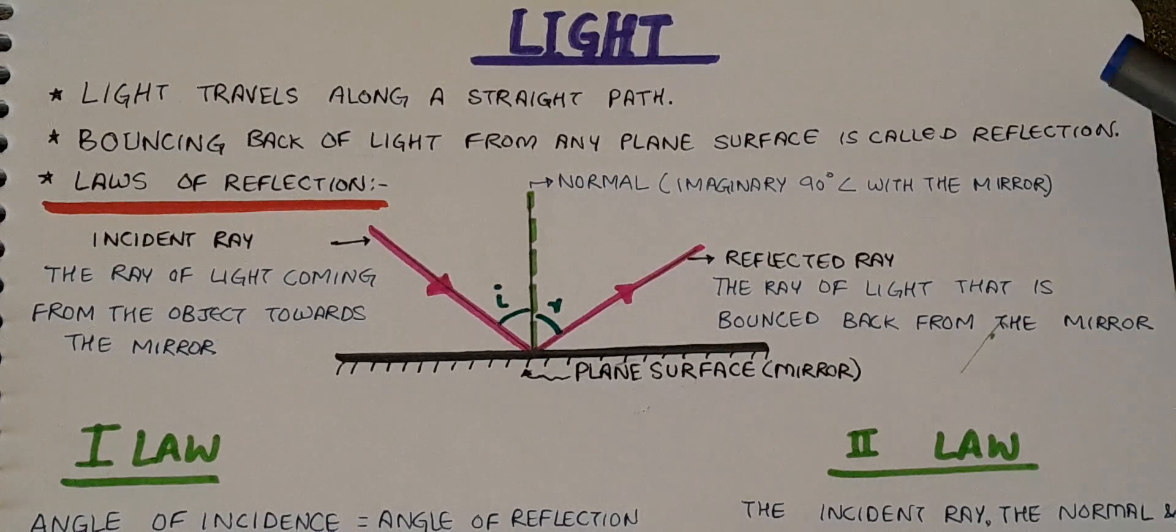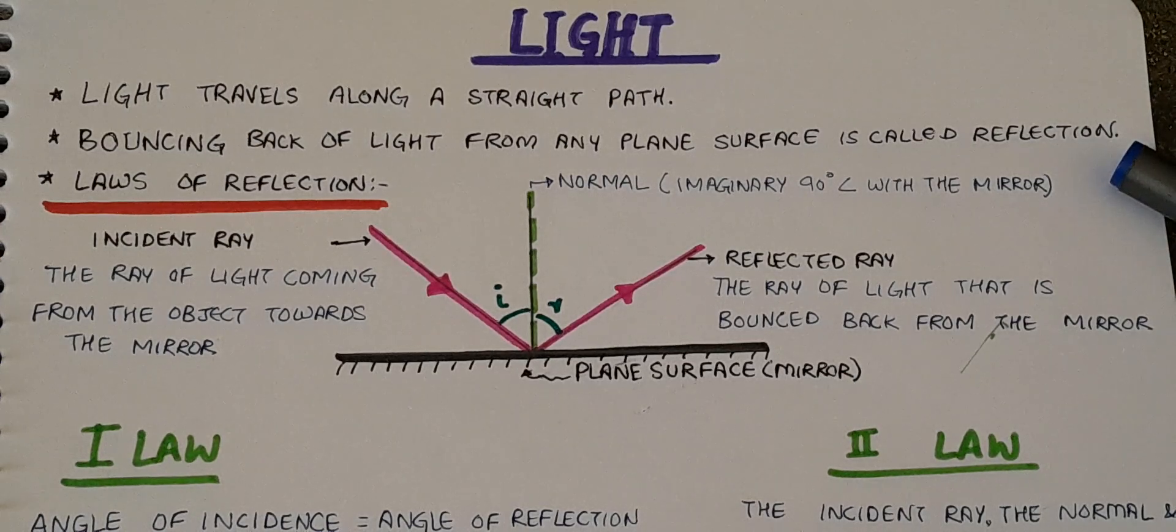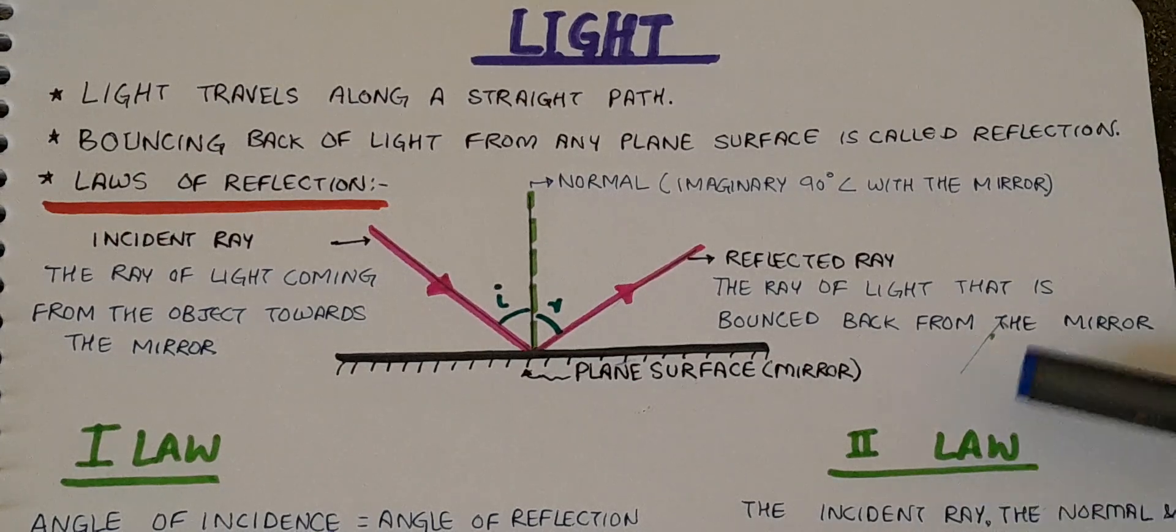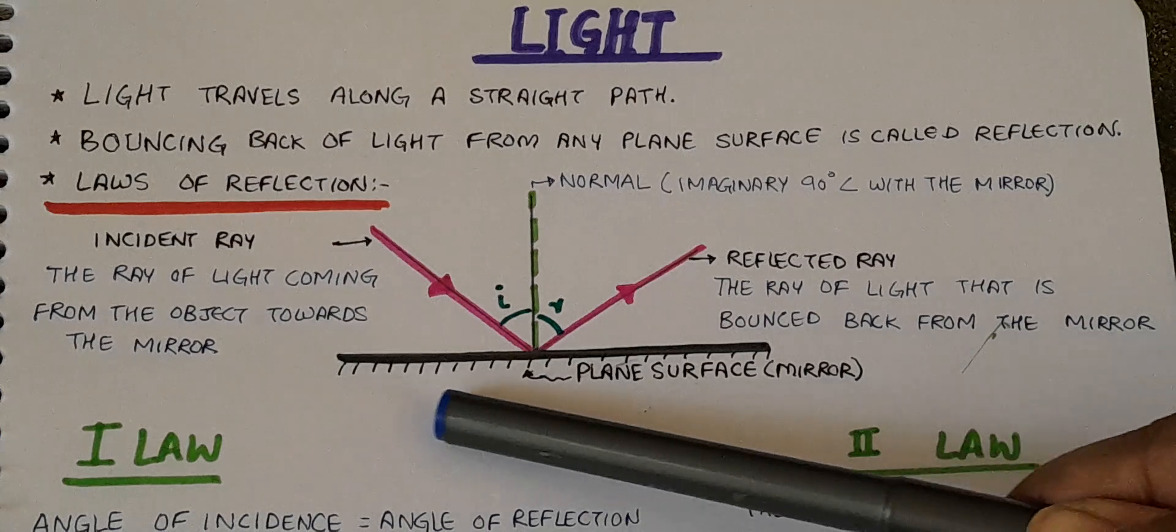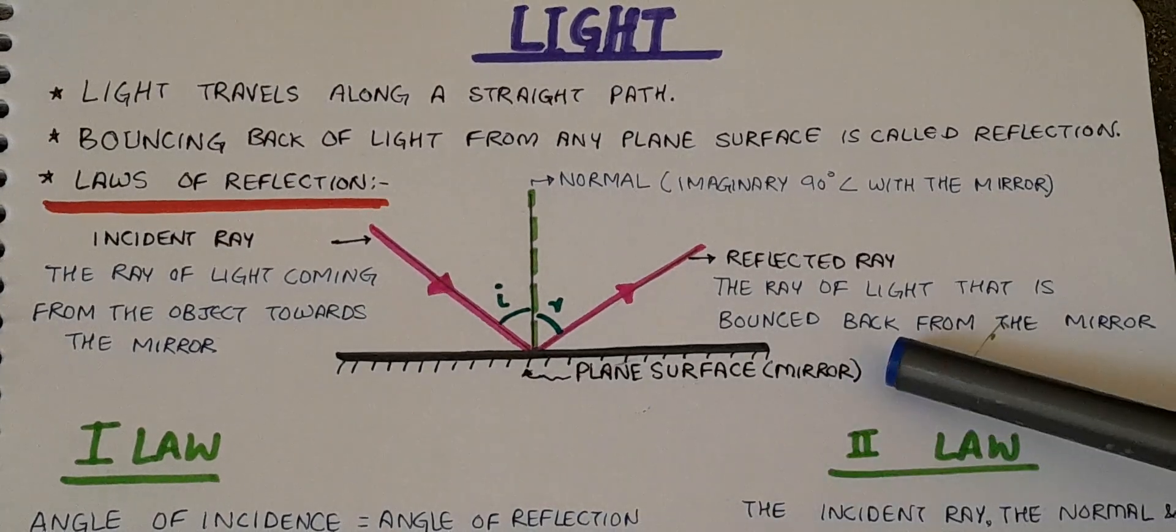To understand this, there are two laws of reflection. But before understanding them, let's understand this figure. For example, we have taken a plane surface here, which is our mirror.